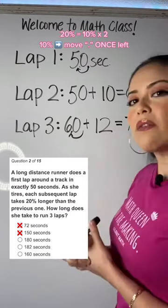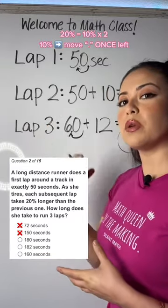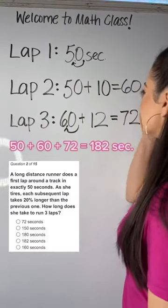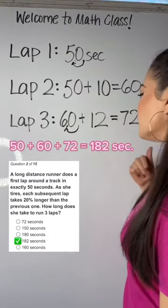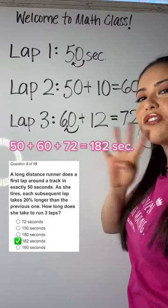Now that we have all the values for lap 1, 2, and 3, let's add 50 plus 60 plus 72, which equals 182 seconds. That is your fourth option.